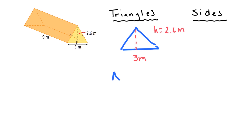We always want to write the formula for finding the area of a triangle. The formula is: area equals base times height divided by 2. You can also see it written as one-half times base times height — it's the same thing.